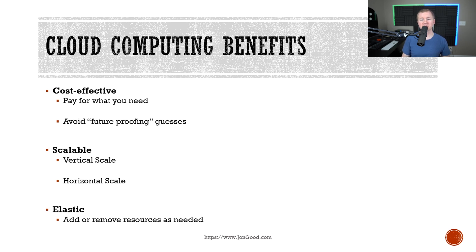Cloud computing is also scalable. You can scale it in a few different ways. You can do vertical scaling, which is called scaling up — this is basically when you're increasing the resources on an existing server, so maybe you need more RAM or more CPU power. You can also do horizontal scaling, which is scaling out, and this allows you to add more servers. So maybe you want to add load balancing and the ability to process all these requests among a bunch of different servers.